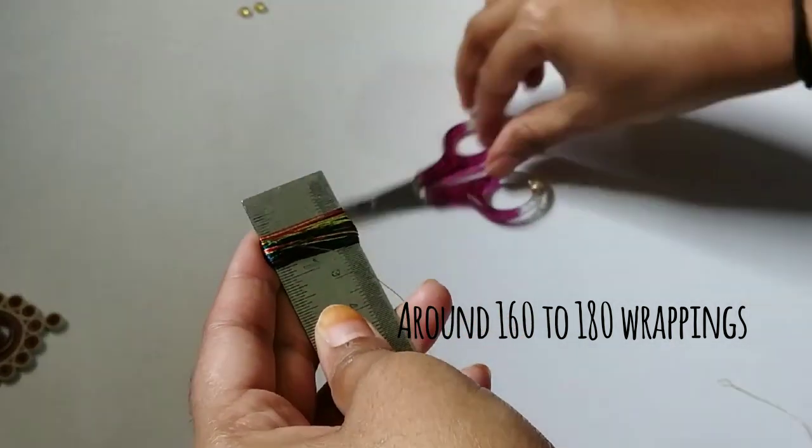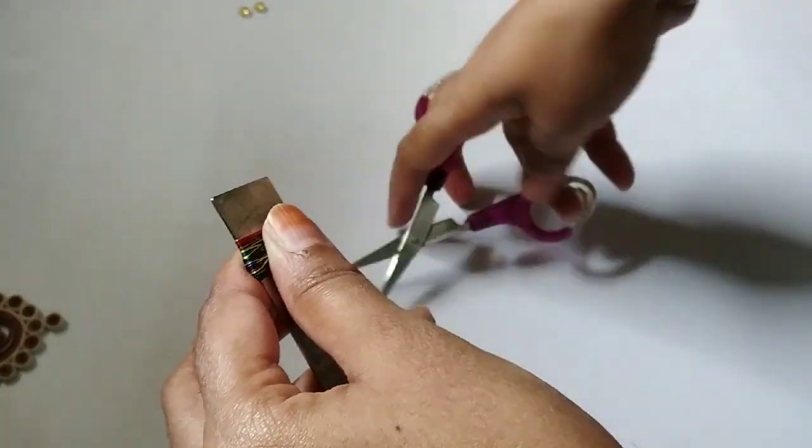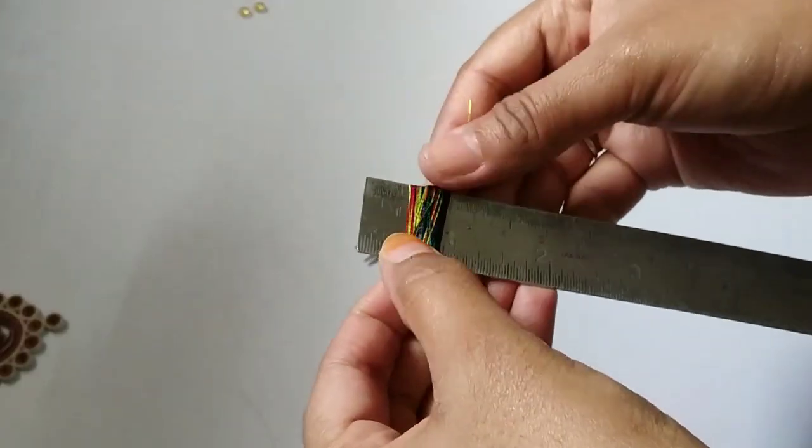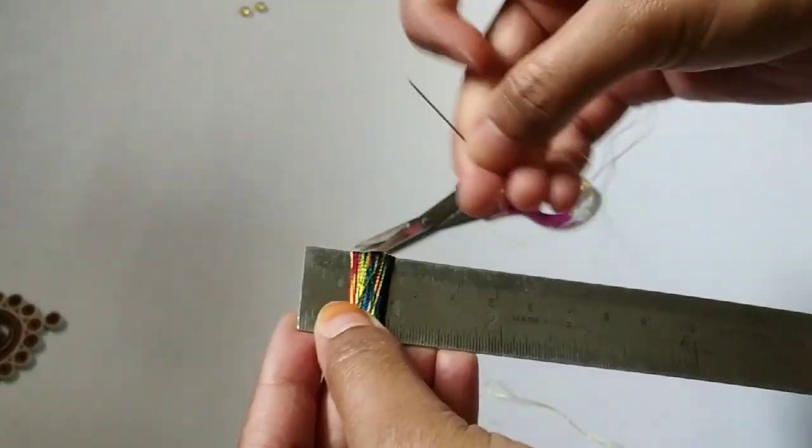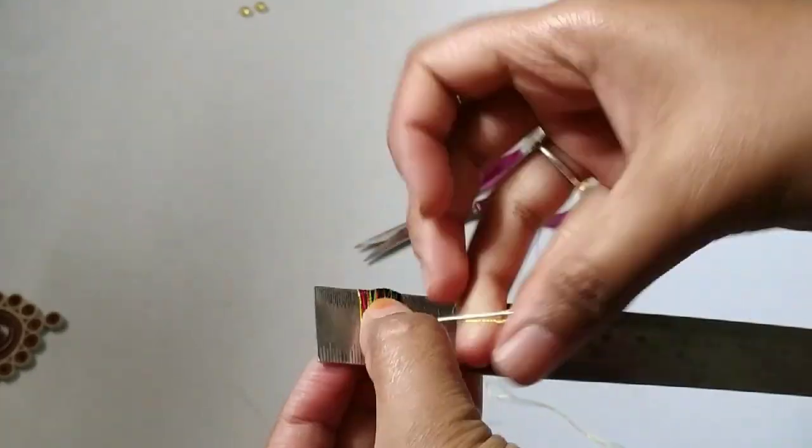Here we need around 160 to 180 wrappings in order to get a good volume for our tassel earring. I have wrapped around 180. Now once the wrapping is done, take a needle and a thread to tie a knot at the center.